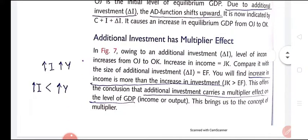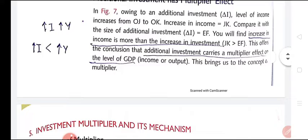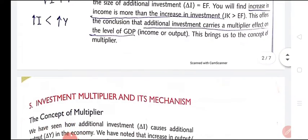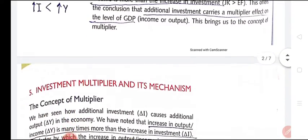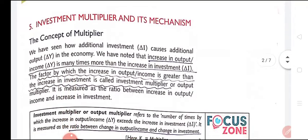Now let's see what the multiplier effect is. If investment is increased, it will lead to an increase in income, but the rate of increase in investment will always be less than the rate of increase in income. So income and investment are positively related — more investment means more income, less investment means less income — but the rate of increase in investment is always less than the rate of increase in income.